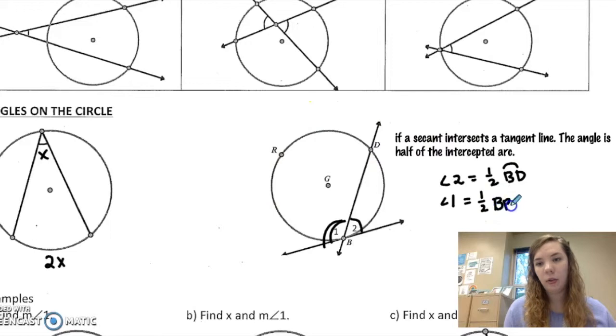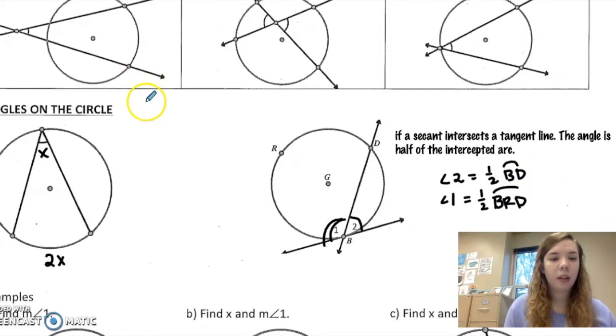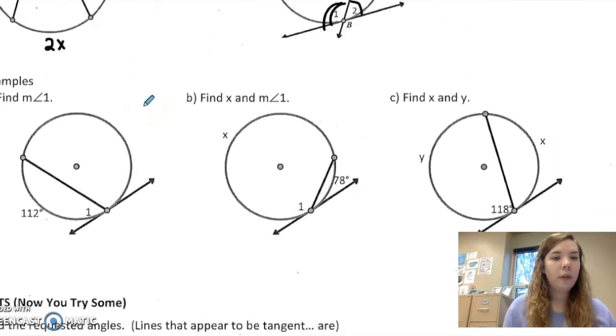So here, if I want to find angle 1, I would take half of 112, which is 56.